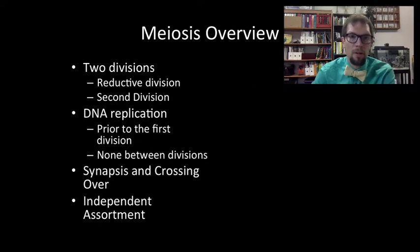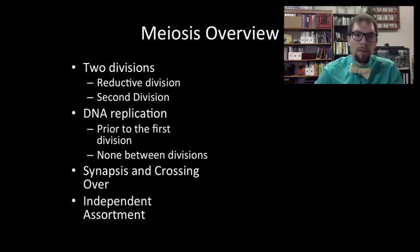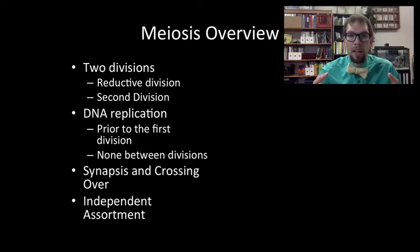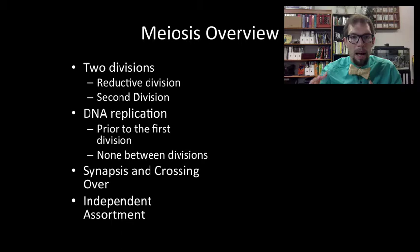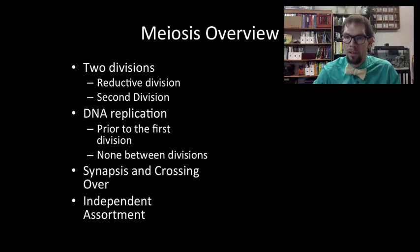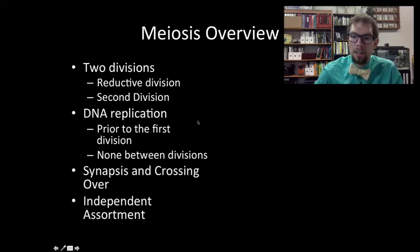Meiosis consists of two divisions instead of just the single division that mitosis consists of. The first division is the reductive division, because the cell goes from being diploid to being haploid. After the first division the cell is haploid. The second division further separates things — homologous chromosomes get separated during the first division, and sister chromatids get separated during the second. DNA replication occurs before the first division, but there is no replication between the two divisions of meiosis.